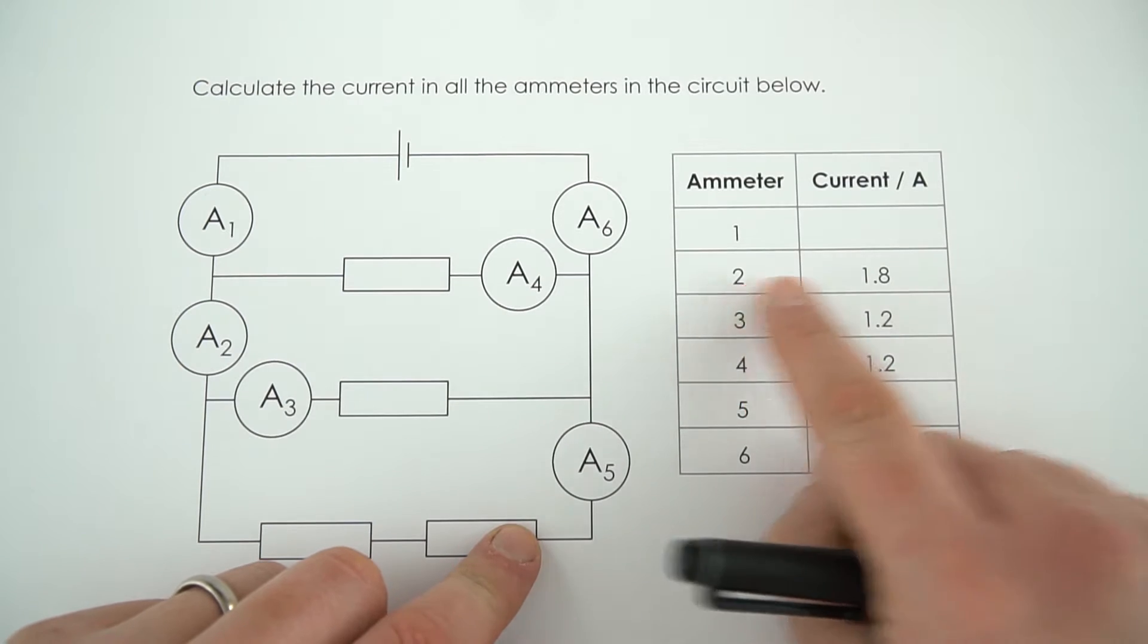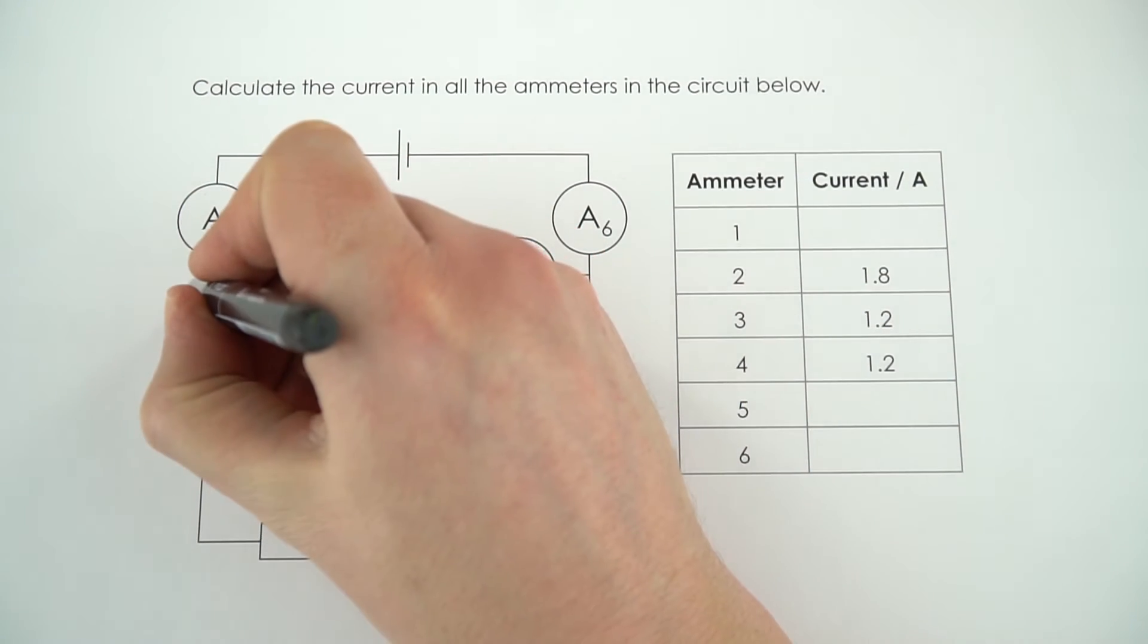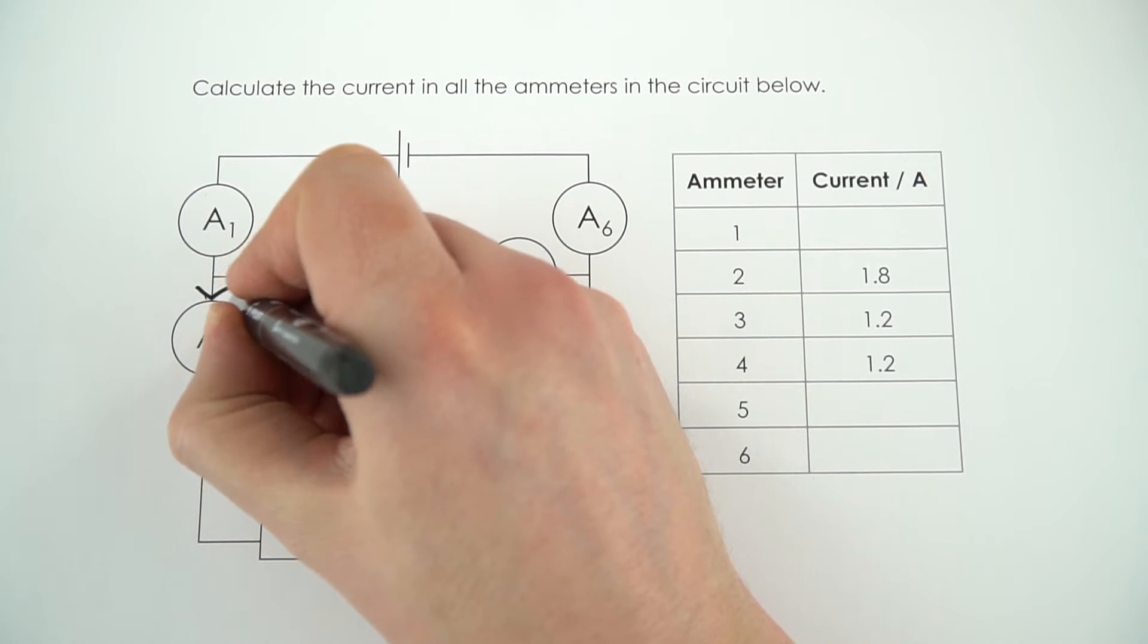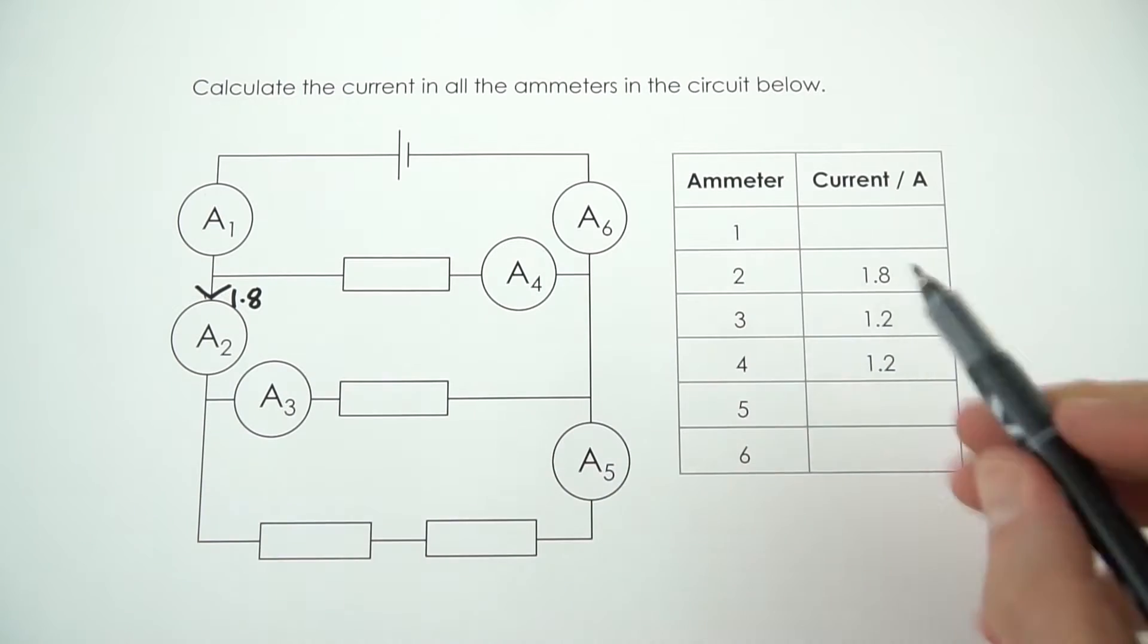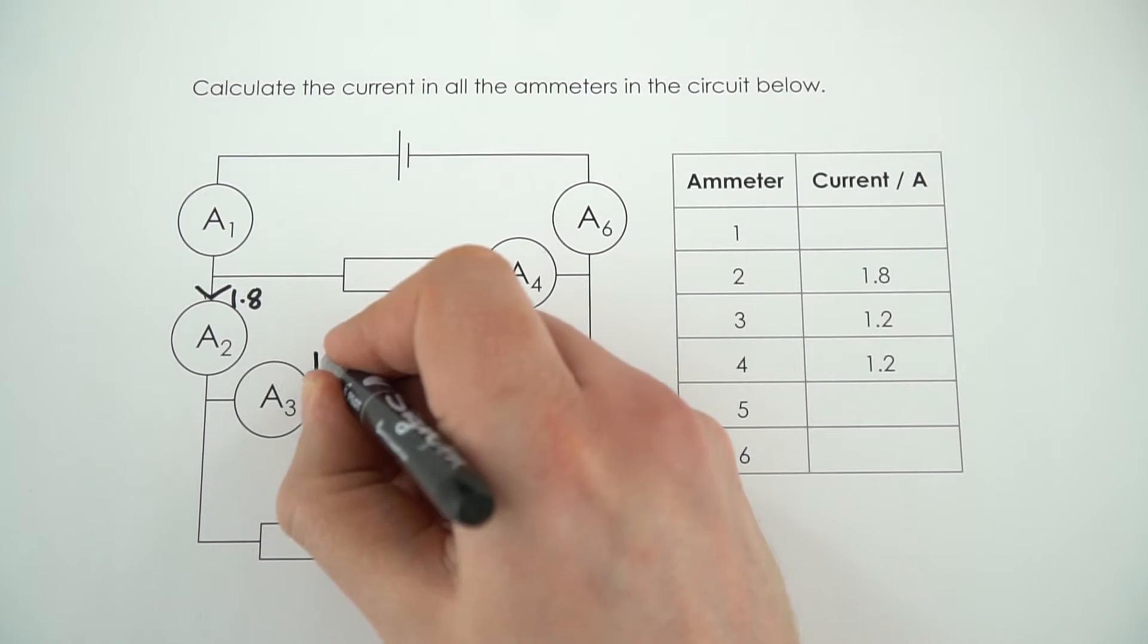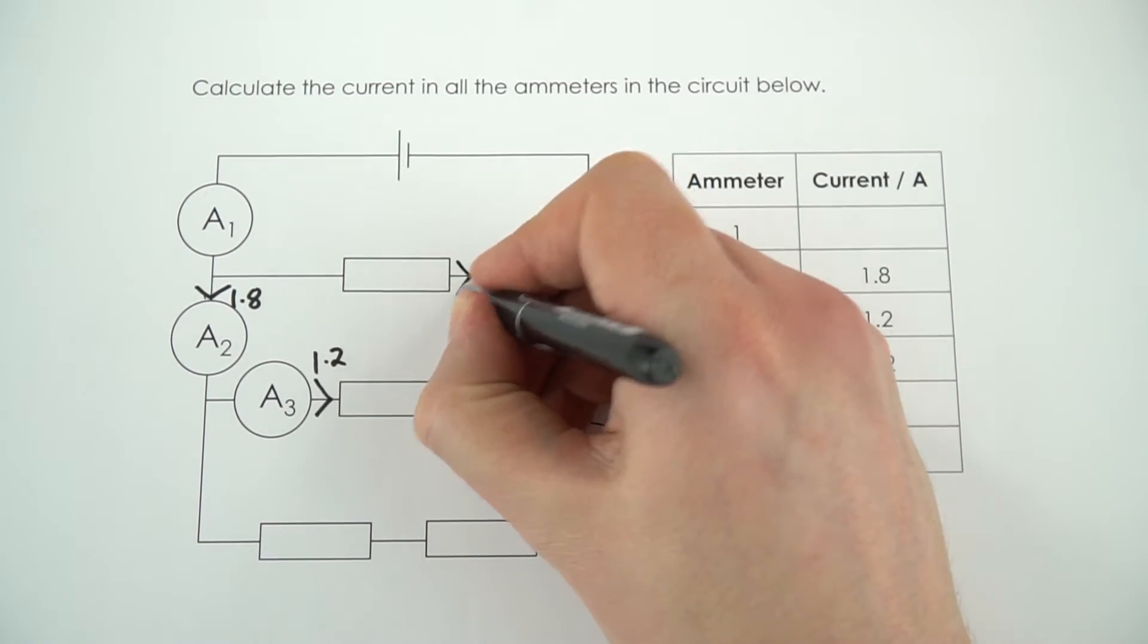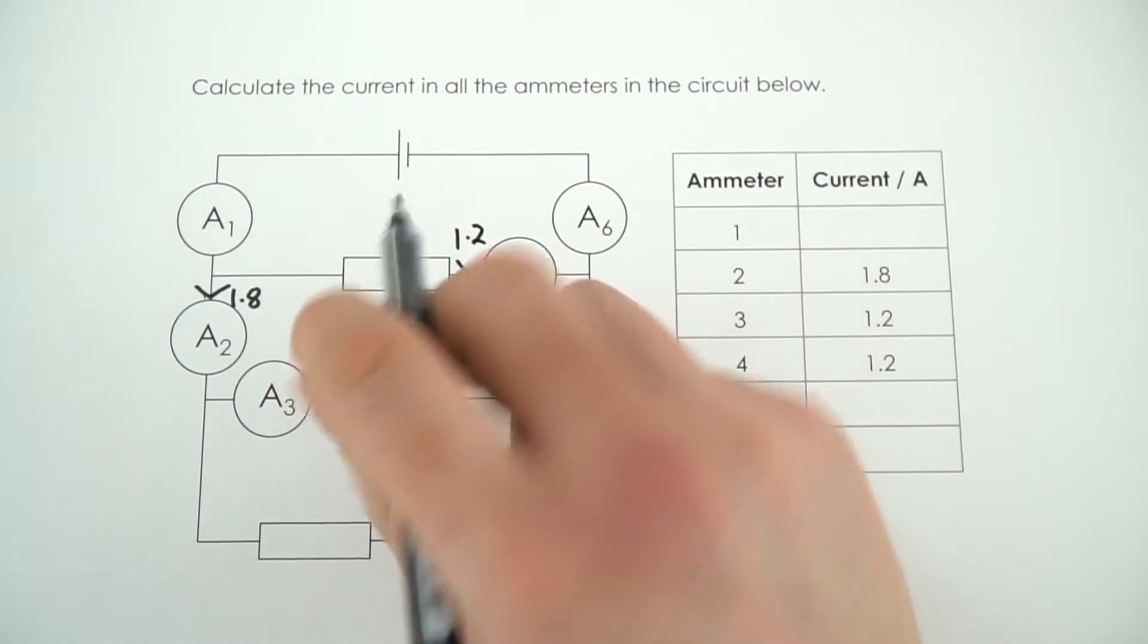For ammeter 2 there's a current of 1.8 amps, so I'm just going to draw an arrow here to show that at this point in this part of the circuit the current is equal to 1.8. For ammeter 3 it's 1.2, so I'm just going to put 1.2 down there, and for ammeter 4 it's also 1.2. That's what I know from the question.